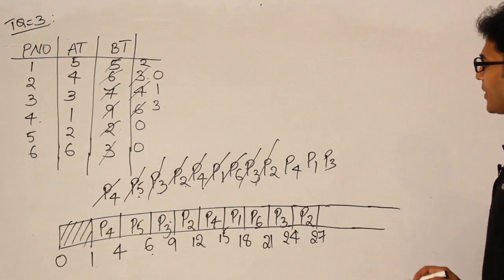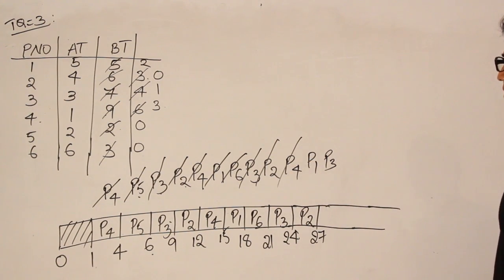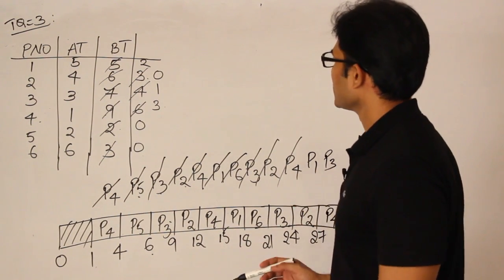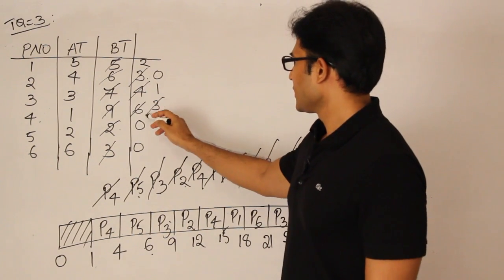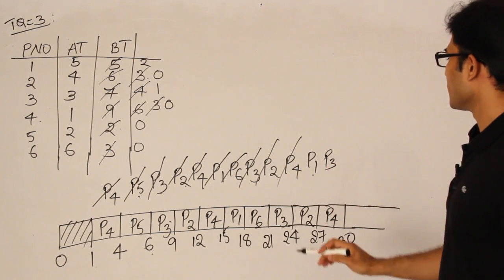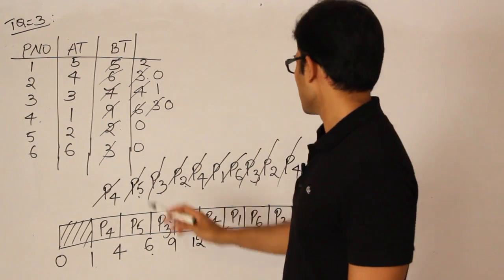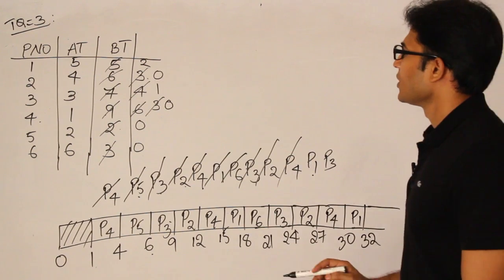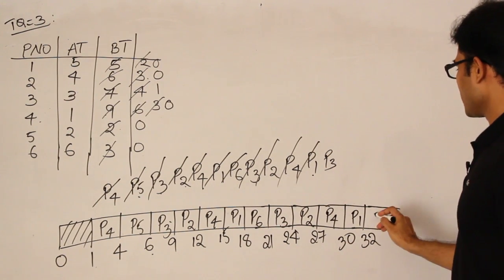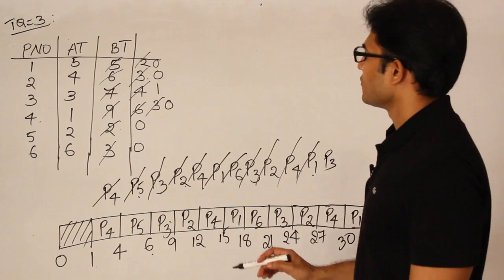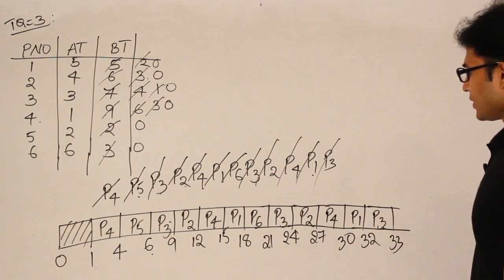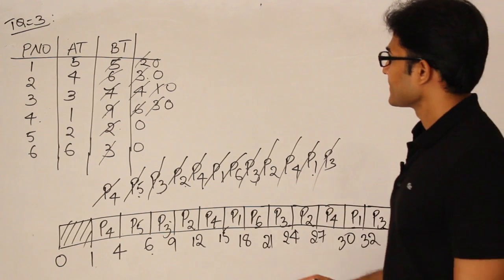P2 completes at 27 and is not added back. Next is P4, which needs exactly 3 units, so it runs to completion at time 30. Then P1 needs 2 more units and runs until 32, completing with 0 remaining — not added back. Finally, P3 needs only 1 unit, runs to completion at time 33. That completes the entire Round Robin scheduling procedure.